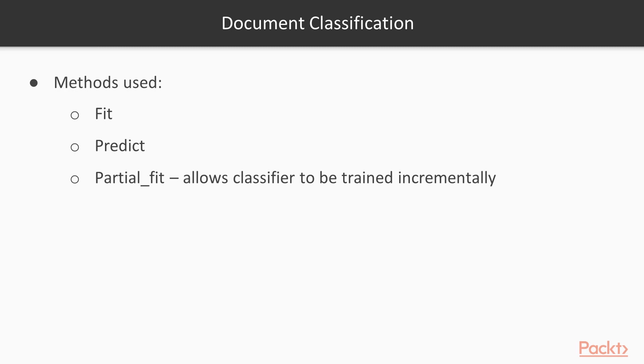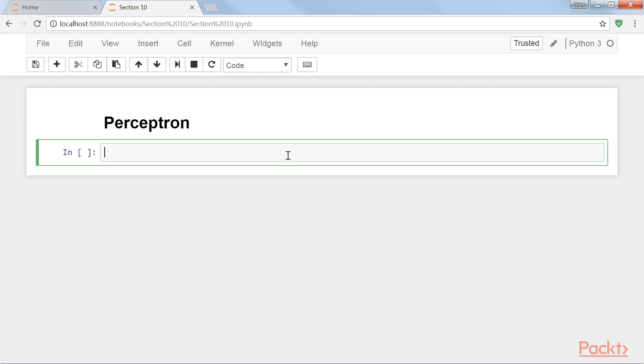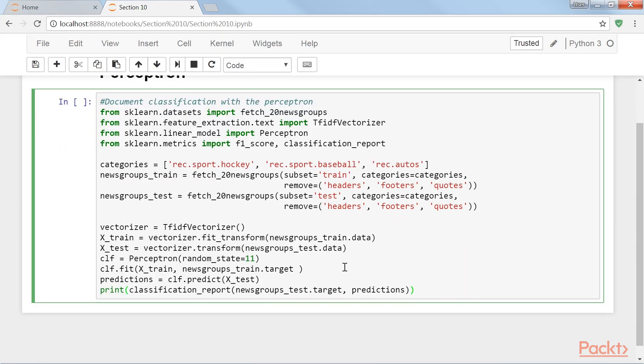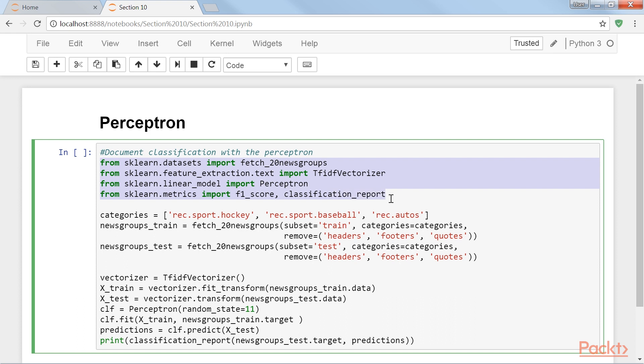Now let's look at document classification with the perceptron. Like other estimators, the perceptron class implements fit and predict methods, and hyperparameters are specified through its constructor. Perceptron also implements a partial fit method, which allows the classifier to be trained incrementally. Let's see this with an example. First, we import the necessary packages.